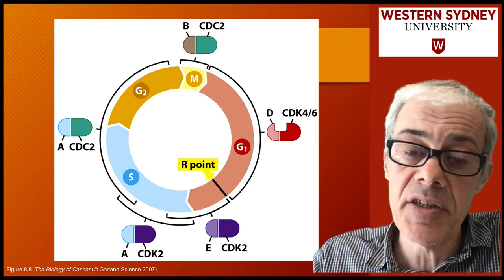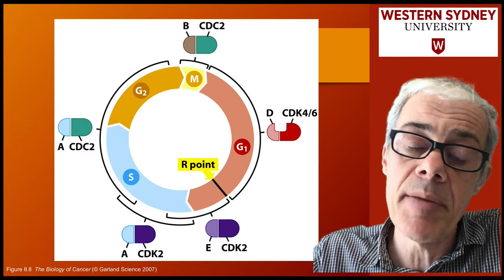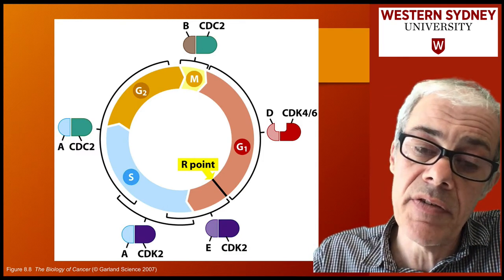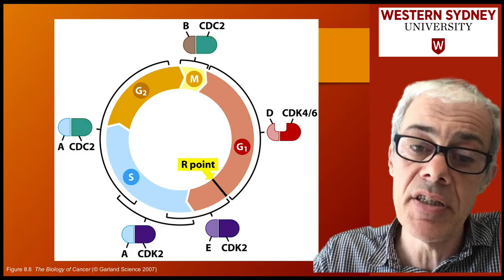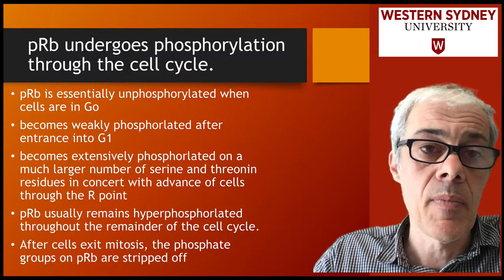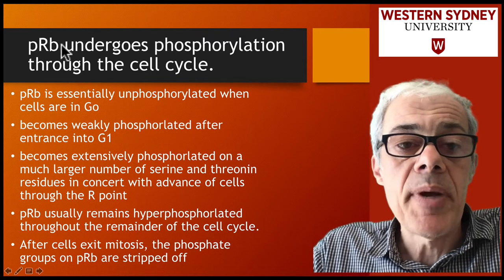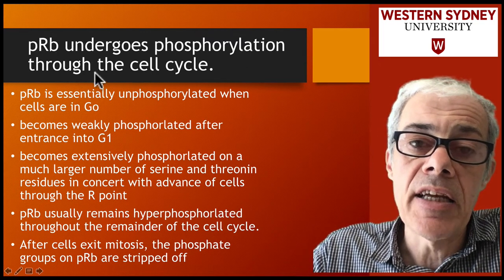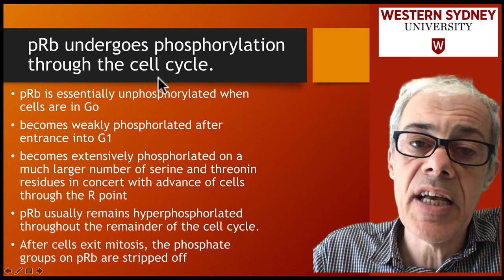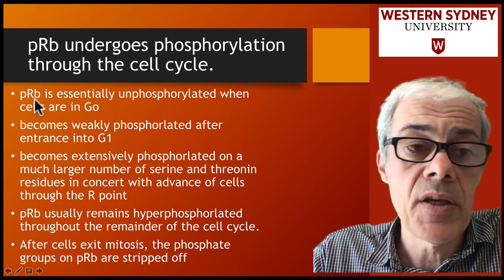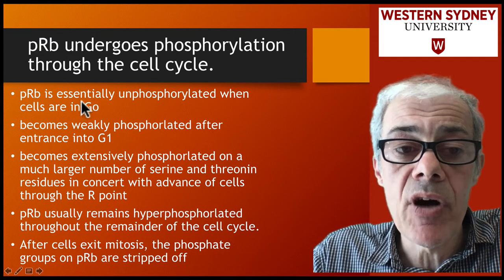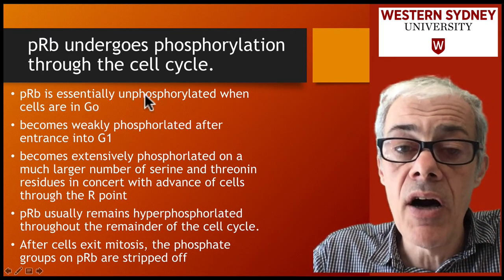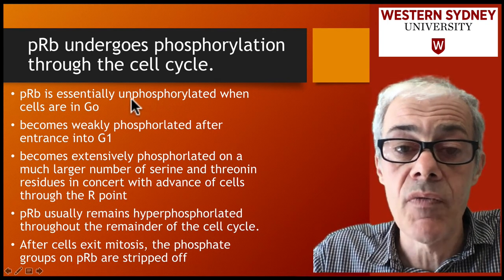We can start to understand how retinoblastoma functions as a tumor suppressor, because we're starting to put its activity in relation to the cell cycle. Retinoblastoma undergoes phosphorylation in a cell cycle-dependent way. Early in G0 phase, retinoblastoma is unphosphorylated — so it's not phosphorylated.